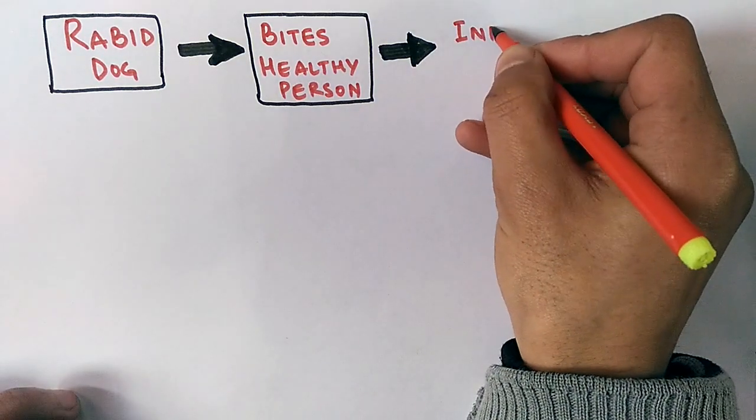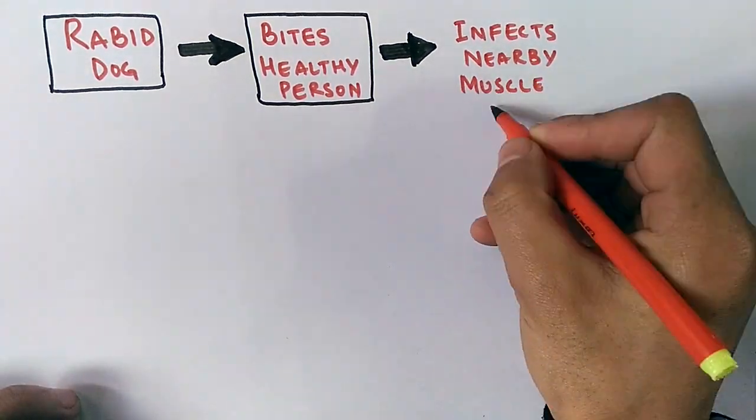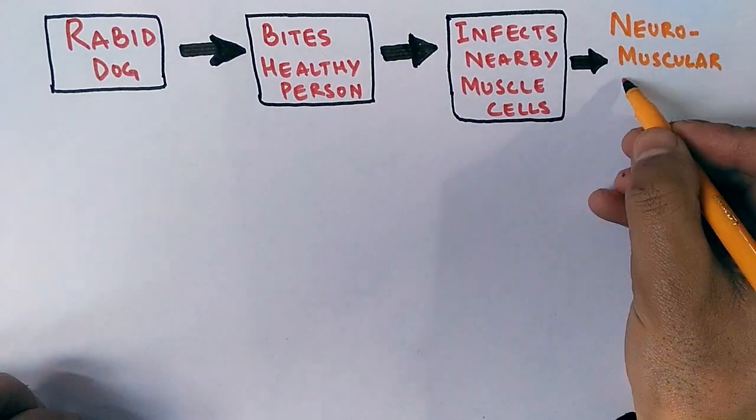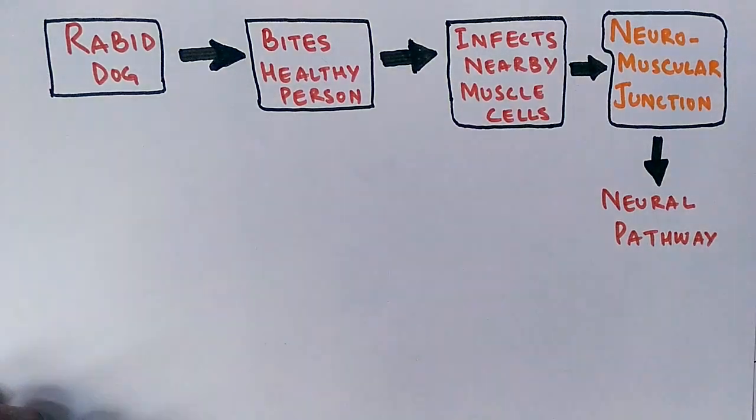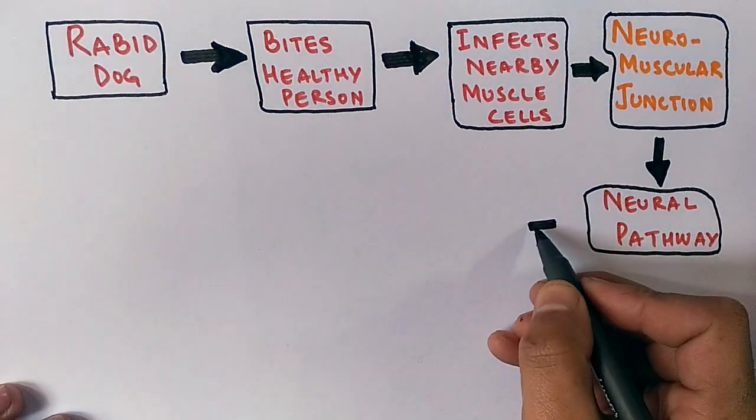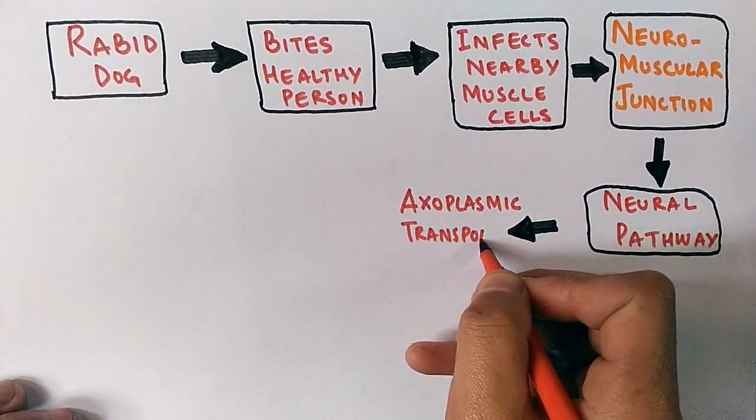In this healthy person it infects the nearby muscle cells, and from these muscle cells there is a neuromuscular junction from where it starts to get into our neural pathway.